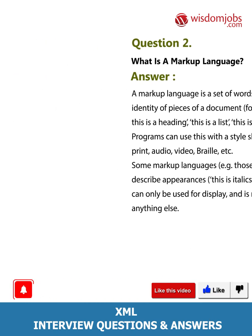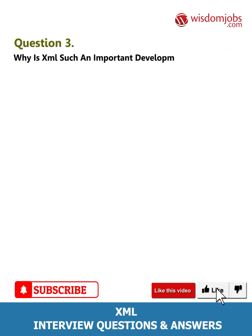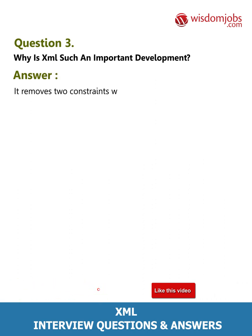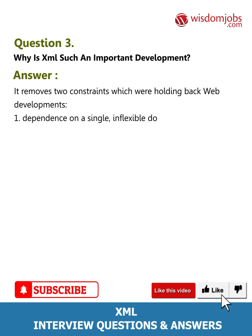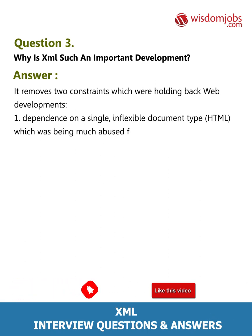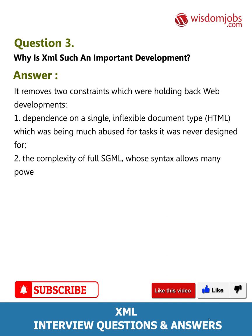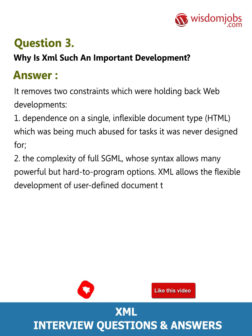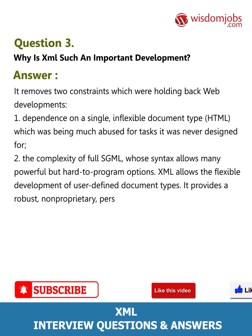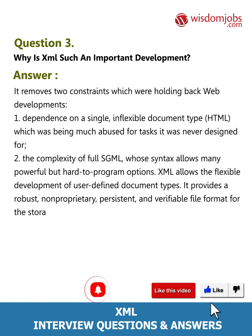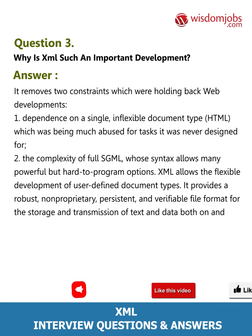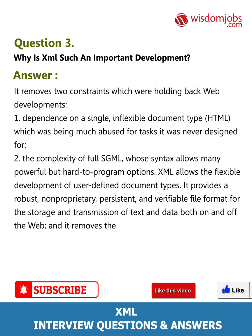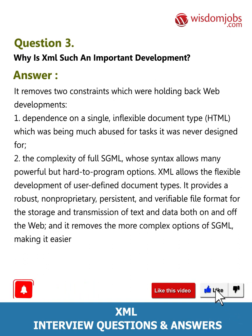Question 3: Why is XML such an important development? Answer: It removes two constraints which were holding back web development: one, dependence on a single inflexible document type HTML, which was being much abused for tasks it was never designed for; two, the complexity of full SGML, whose syntax allows many powerful but hard-to-program options. XML allows flexible development of user-defined document types and provides a robust, non-proprietary, persistent, and verifiable file format for the storage and transmission of text and data, both on and off the web.